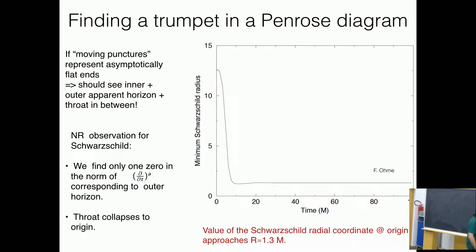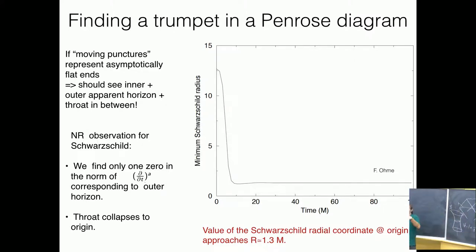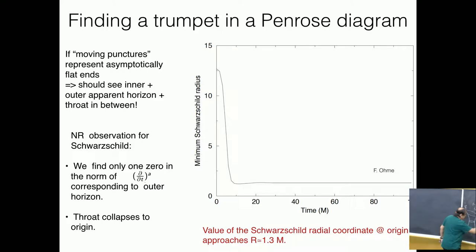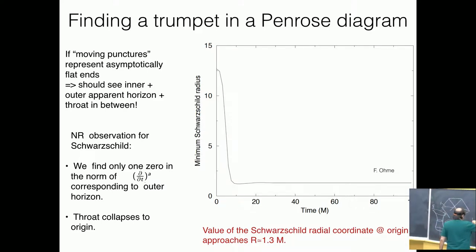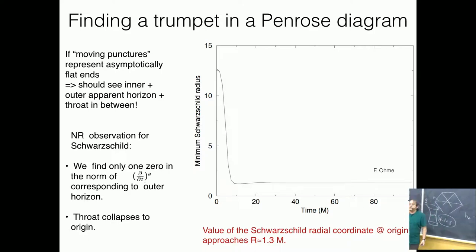We describe this by a conformal factor which goes like 1 plus something divided by r. So r equals zero is basically the center here, and this function goes up in a particular way. My physical metric h_AB is Ψ⁴ times h̄_AB, and in fact h̄_AB here is just flat — the flat metric (Kronecker delta). So why, if we have this kind of shape, does Ψ have to blow up? In a flat metric all the distances are finite.